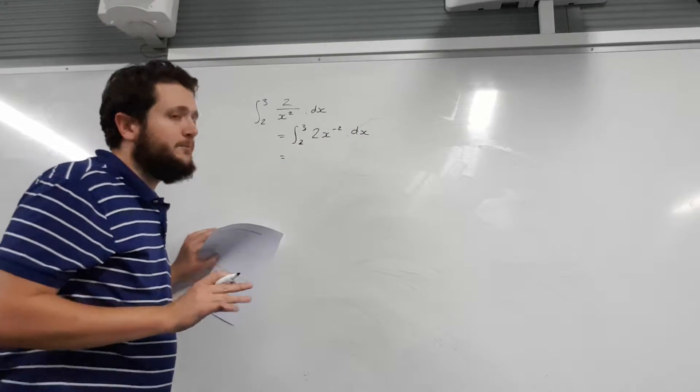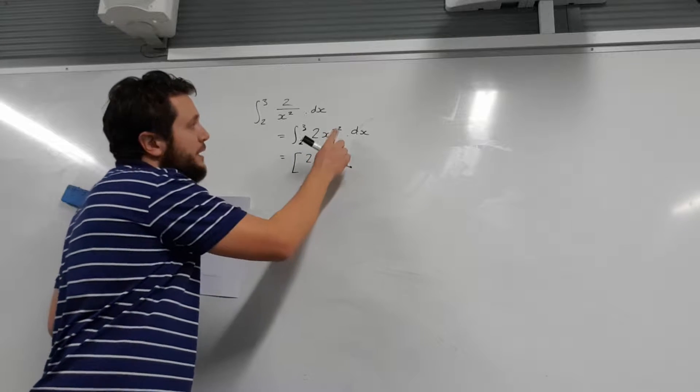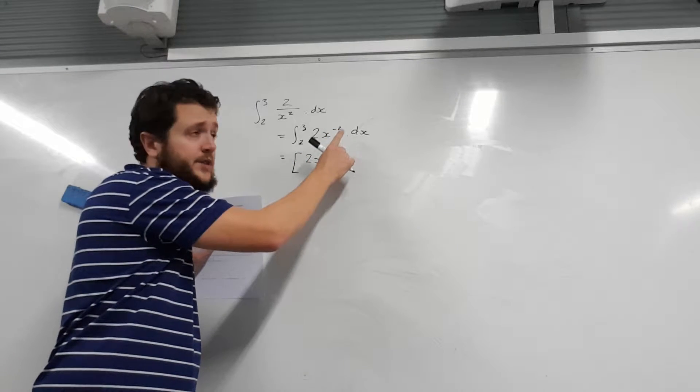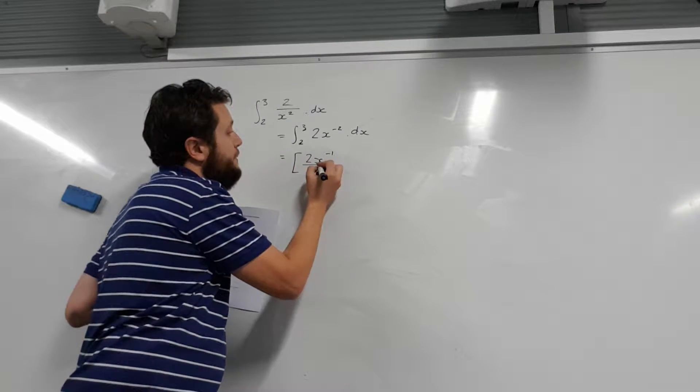Now we can integrate it. We can apply our standard rules. So we're going to increase the power by 1. Be careful with negatives. Increasing by 1 means it's now going to be negative 1. Divide by the new power.